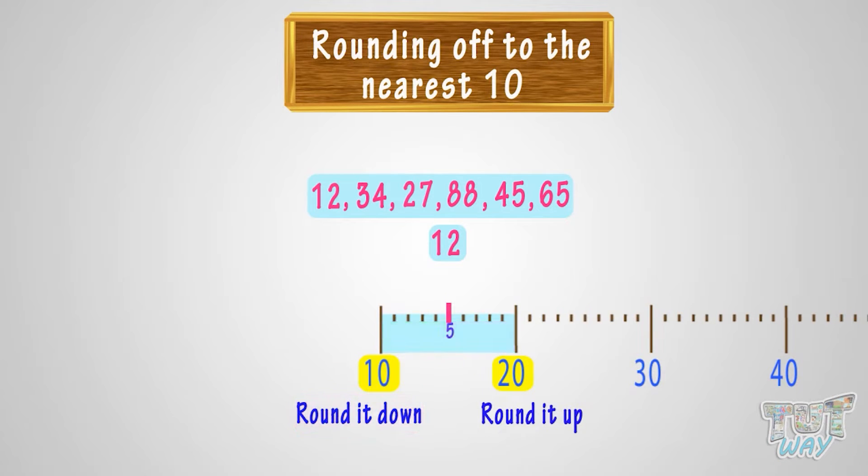Here, 12 is below the 5 mark. Also, 12 is only 2 numbers away from 10, whereas it is 8 numbers away from 20. So, we will round it down to 10.